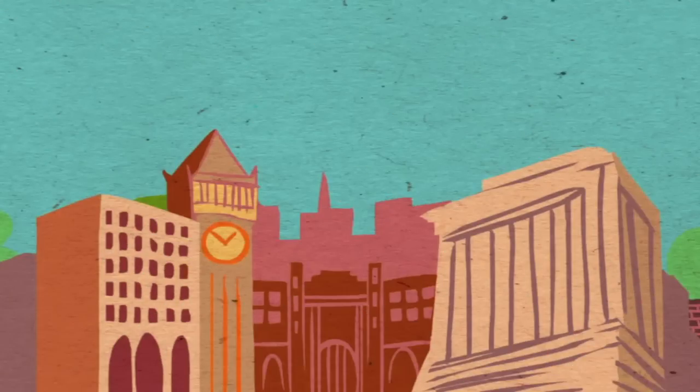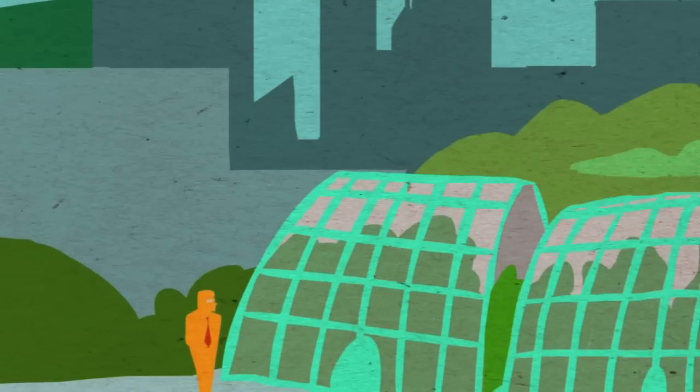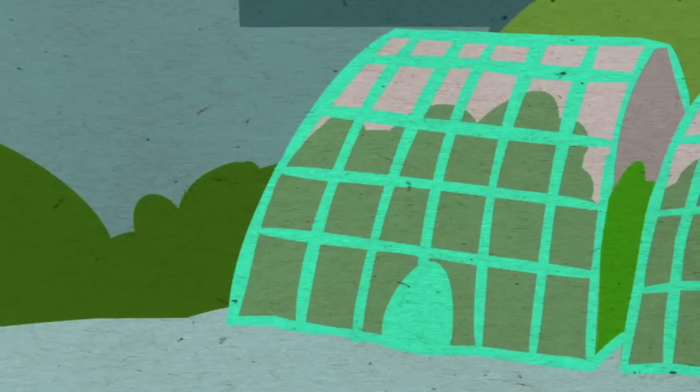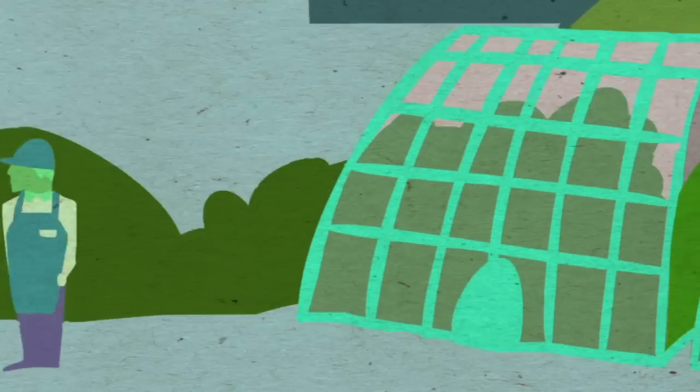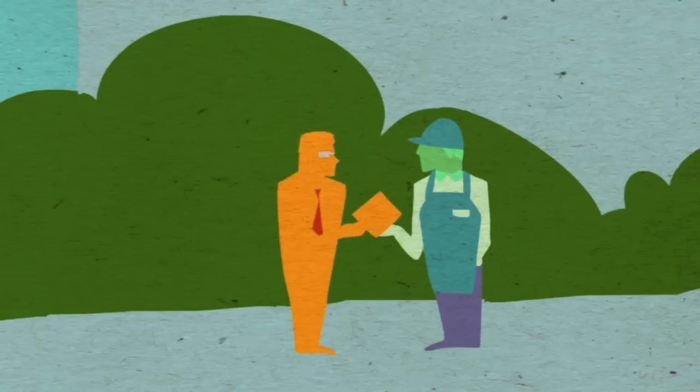The Cleveland model points toward a solution. Anchor institutions want to make their operations more sustainable, and this is an opportunity to create new local businesses to fill these new needs. But we need to make sure that these businesses stay rooted in the communities that need the jobs the most.